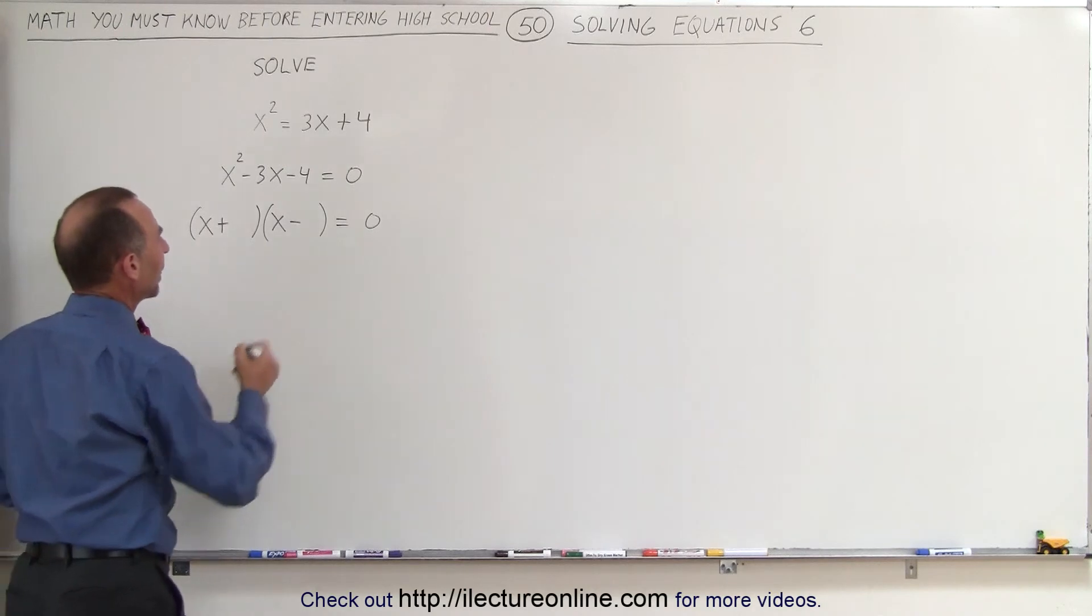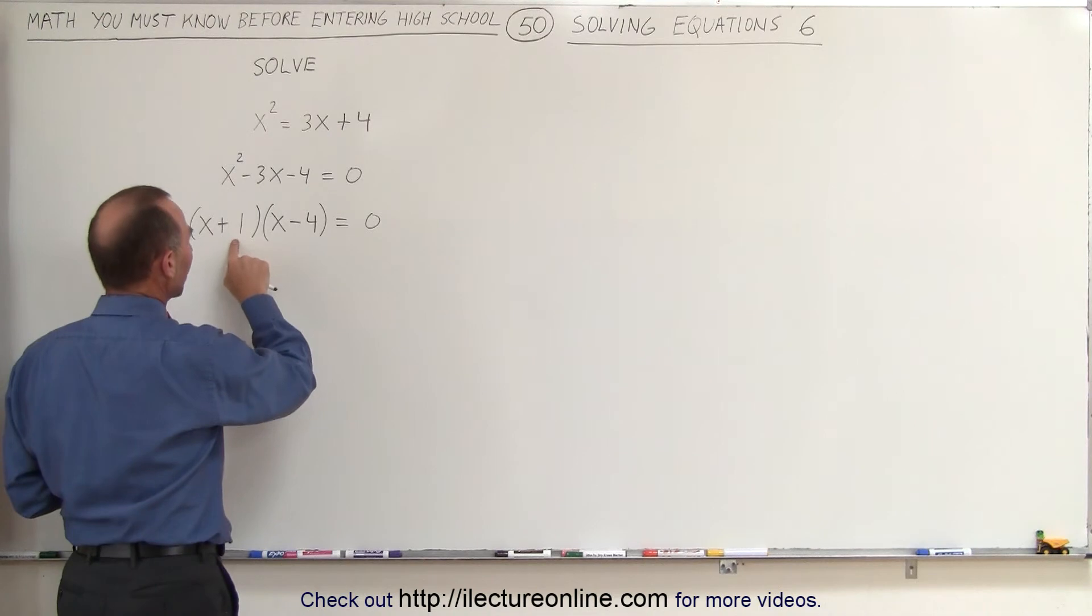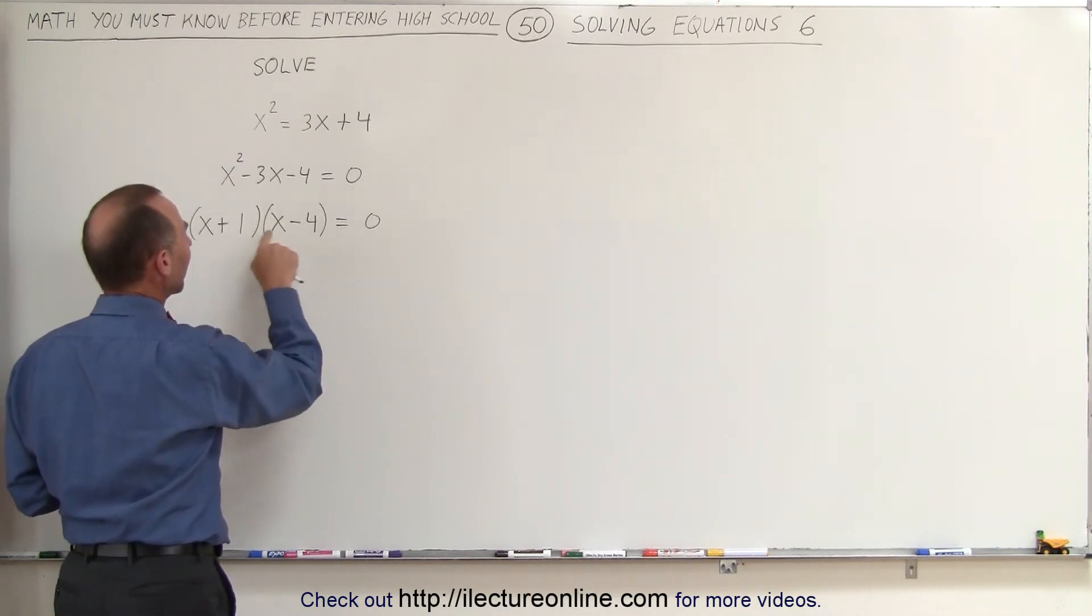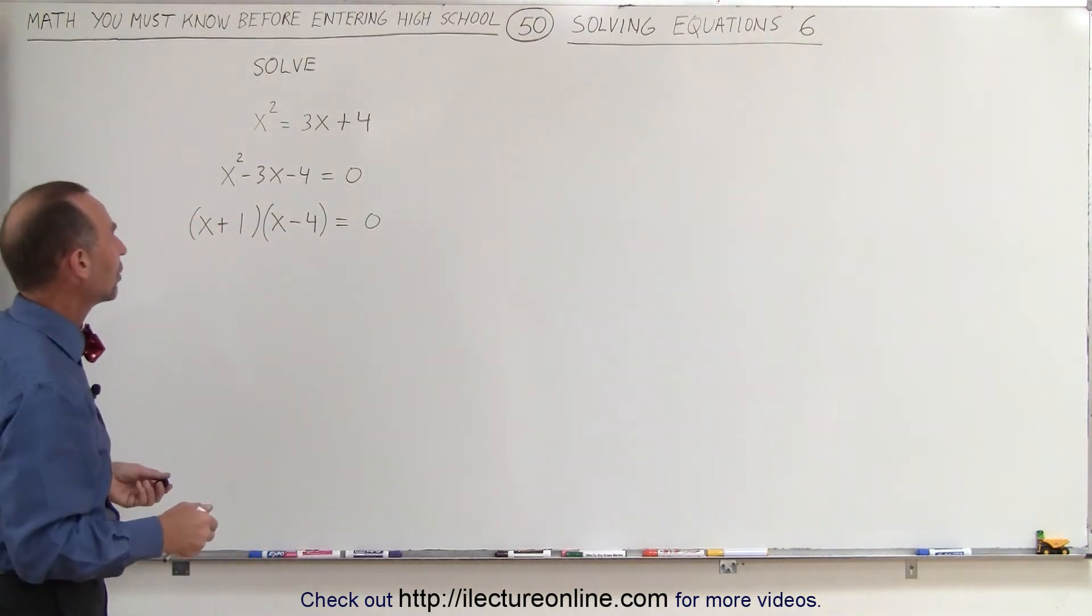How about this? How about a negative 4 and a positive 1? If we add those two together, plus 1 minus 4 gives us negative 3. We multiply a 1 times a minus 4 gives us a negative 4. So it is factorable, which makes it easy to solve the equation.